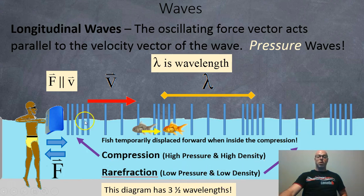So here we've got one compression, one rarefaction, compression and refraction, compression and refraction and compression. So all together, this diagram has three and a half waves. And longitudinal waves are sometimes called pressure waves since they have changes in pressure.